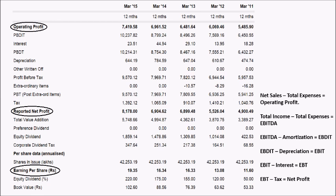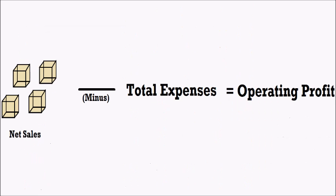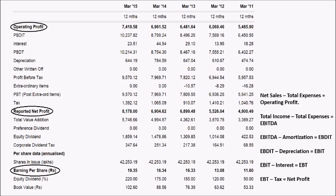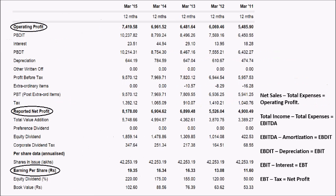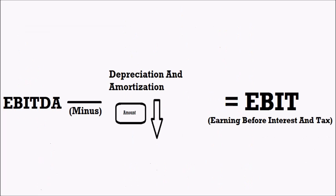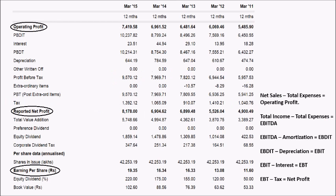Next comes the major part of the income statement: appropriations. First we have operating profits, which are obtained by subtracting all operating expenses from net sales. Next is profit before depreciation, interest and tax, also known as PBDIT. This is obtained by subtracting total expenses from total income, which includes net sales as well as other incomes. By subtracting depreciation from PBDIT we obtain PBIT or EBIT, meaning profit before interest and tax, or earnings before interest and tax.